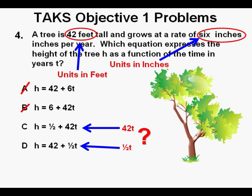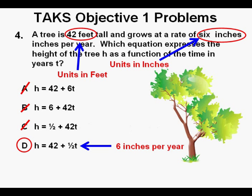And to choose between C and D we have to think: is it going to be 42t or one-half t? If we think about what the 42t means in answer C, it means 42 feet per year, not an answer that makes sense, so we cross it off. Our correct answer has a growth rate of one-half foot per year, which is six inches per year.